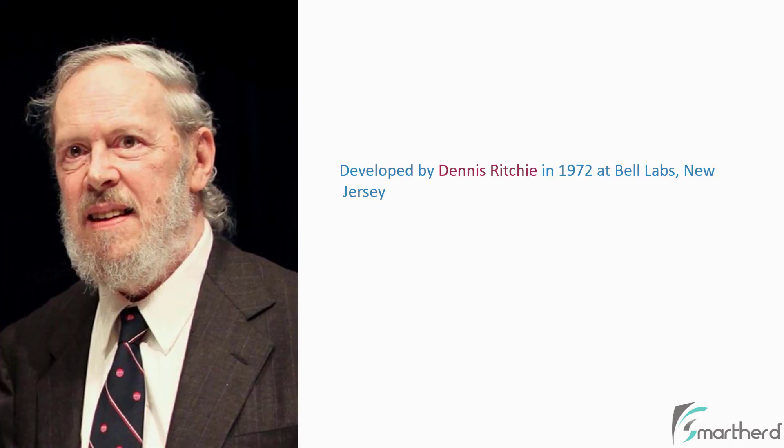C was created in 1972 at Bell Labs by a famous scientist named Dennis Ritchie. And the development of C programming language is closely tied to the development of the Unix operating system.